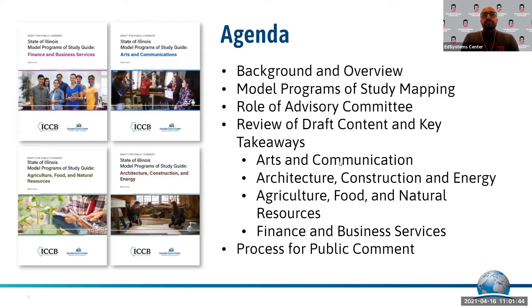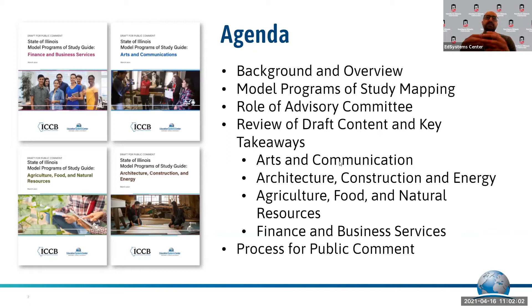We're going to discuss the role of the advisory committee that helped formulate these guides, and then deep dive briefly the content of each particular guide. The four programs of study we are discussing today are Arts and Communication; Architecture, Construction, and Energy, which we call ACE for short; AF&R — Agriculture, Food, and Natural Resources; and Finance and Business Services. At the end of the presentation, we'll also provide a link where all the guides exist, the recording, and the process for public comment, which runs through June 5th.